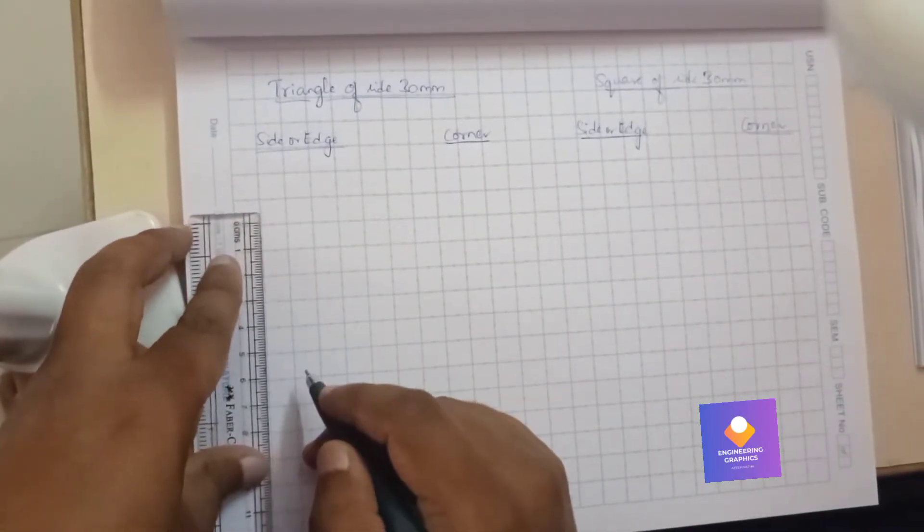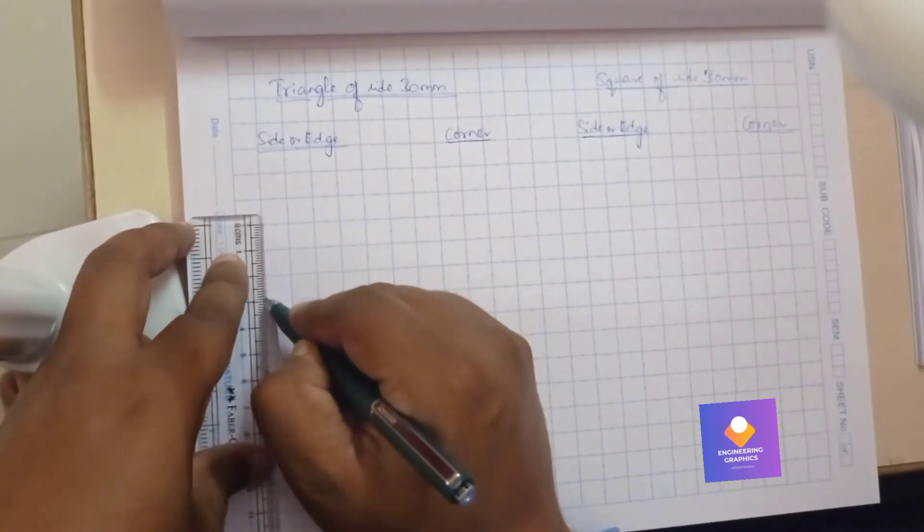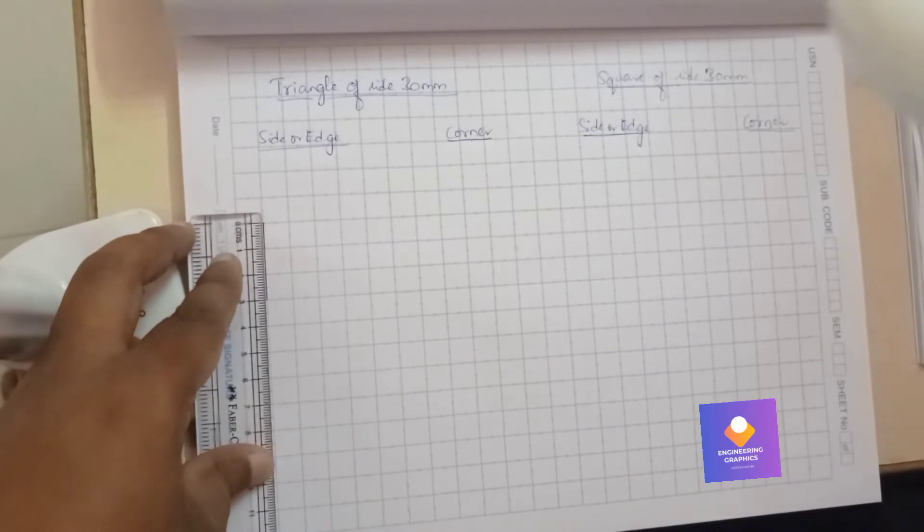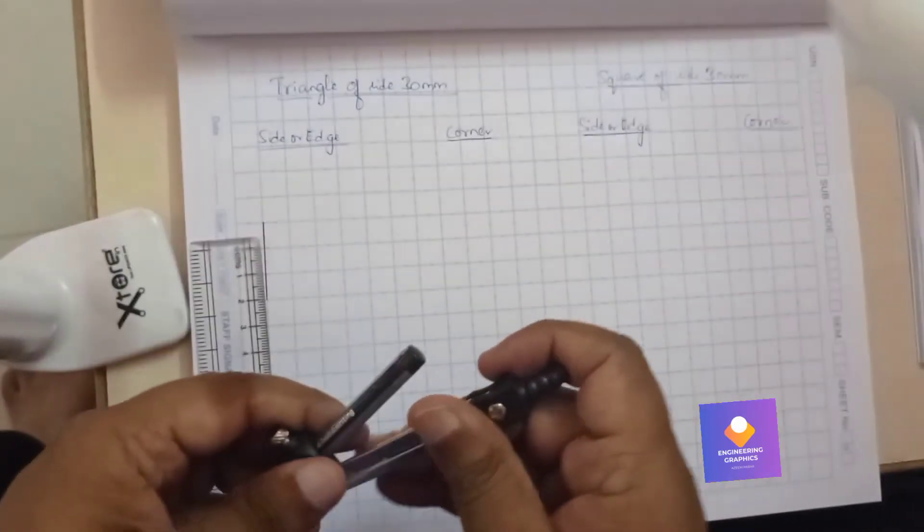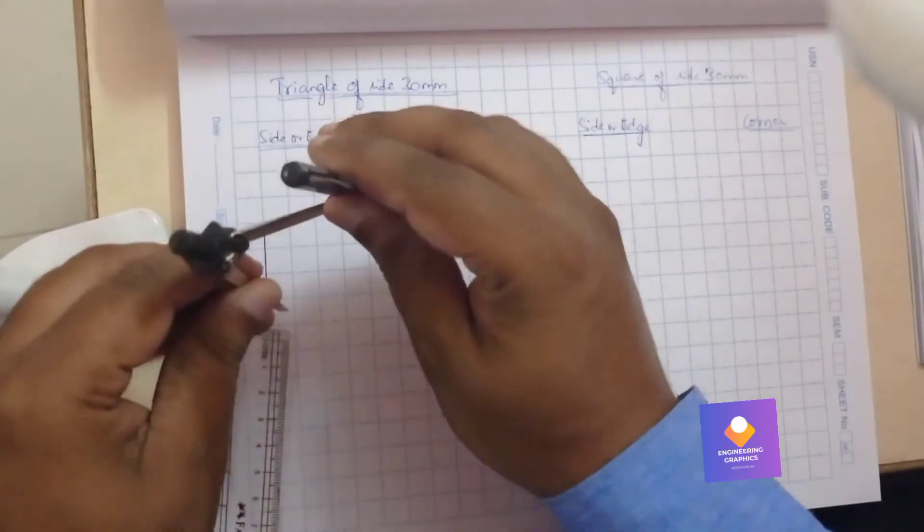Okay, how to construct a triangle of side 30 mm with respect to edge. First we will be drawing a vertical line of 30 mm measuring from the scale. Then we will take the compass and measure the same 30 mm length.